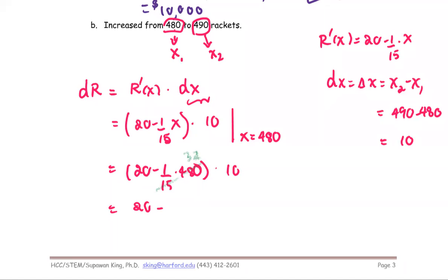So then we're going to have 20 minus 32 and then multiply by 10. 20 minus 32 is negative 12. 12 multiplied by 10, the result is negative 120. And for the second case here, the change in revenue is negative 120.